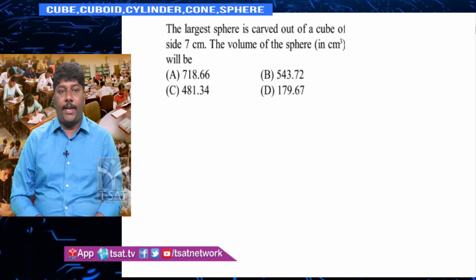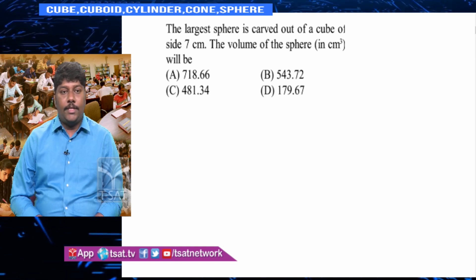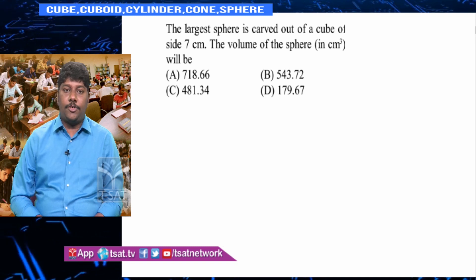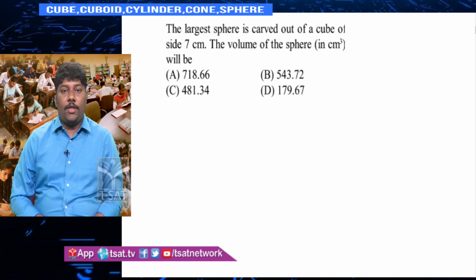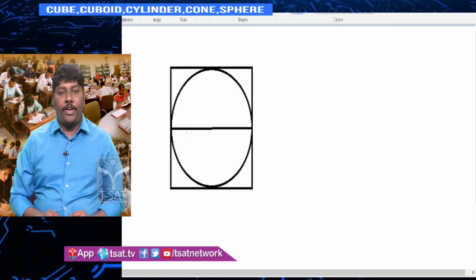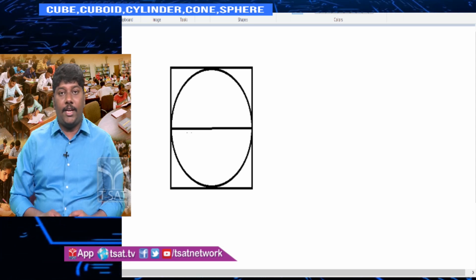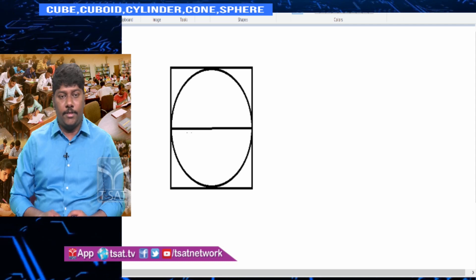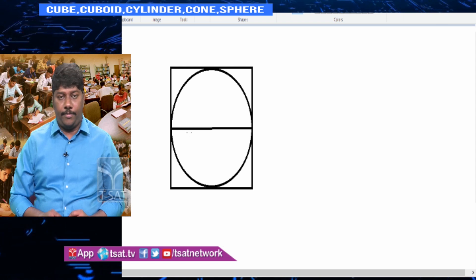The largest sphere is carved out of a cube of side 7 cm. Find the volume of the sphere in cm³. The front view looks like a circle inscribed in a square. The diameter of the sphere equals the edge of the cube, so 2r = a = 7, therefore r = 7/2.